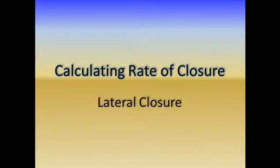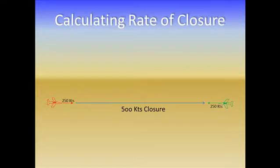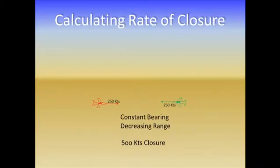First, let's consider lateral closure. In this example, we have two airplanes heading towards each other on a collision course at 250 knots. It's obvious to see that we have a 500 knot closure rate. As the aircraft continue to approach each other, we have a constant bearing and decreasing range. So from each pilot's perspective, the other airplane is continuing to be on the same bearing as he looks out his window, and the range is decreasing. Whenever we have this situation, the airplanes are on a collision course, and our closure is still 500 knots.